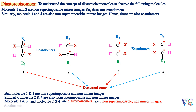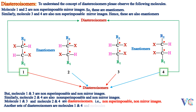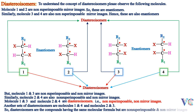Another set of diastereoisomers are molecules 1 and 4, and molecules 2 and 3. So diastereoisomers are compounds having the same molecular formula but are non-superimposable and non-mirror images.